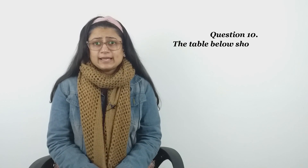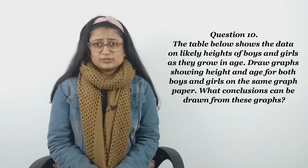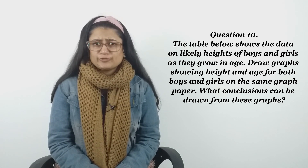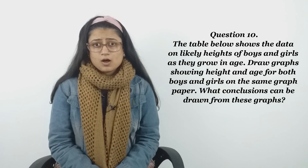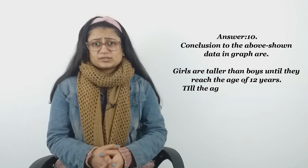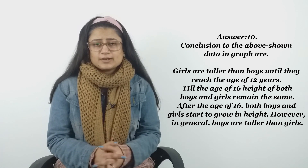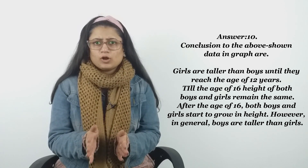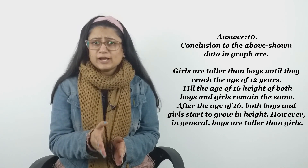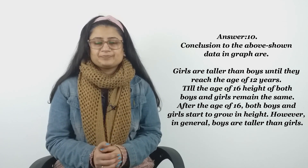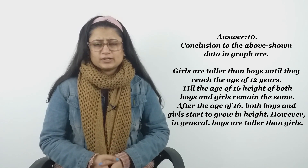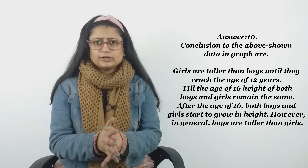Question number ten: The table on the screen shows data on likely heights of boys and girls as they grow in age. Draw graphs showing height and age for both boys and girls on the same graph paper. Conclusions from the graphs: one, girls are taller than boys until they reach the age of 12 years; two, till the age of 16, height of both boys and girls remains the same; three, after the age of 16, boys are generally taller than girls.